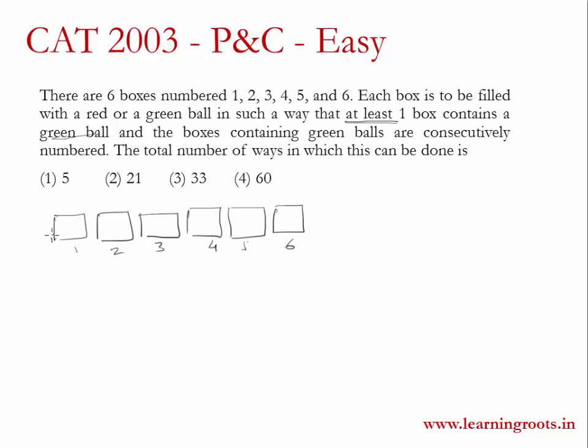Let's start by putting only one green ball. That green ball can be in the first box, second box, third, fourth, fifth, or sixth box, which means we have six possibilities if we are using only one green ball.